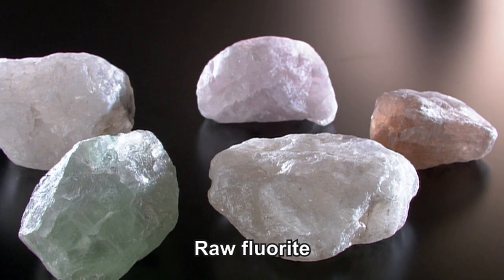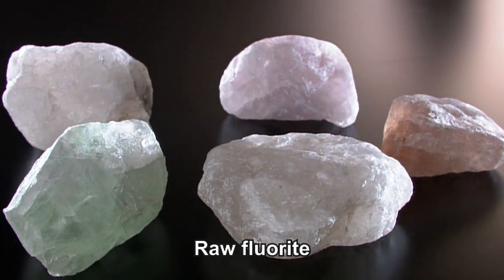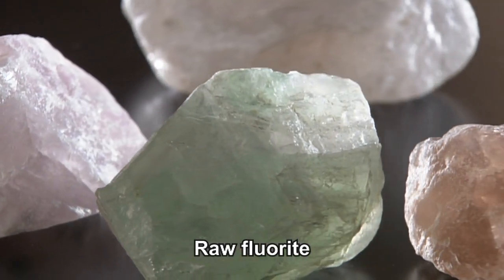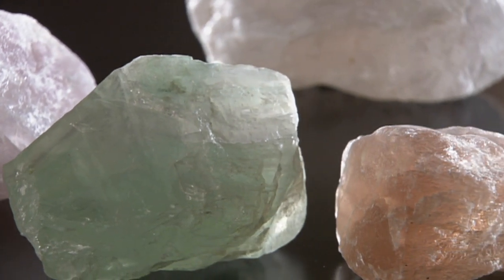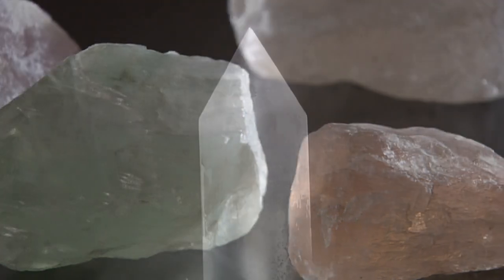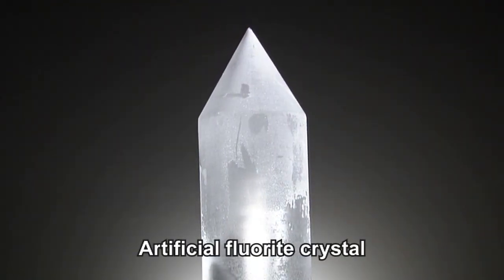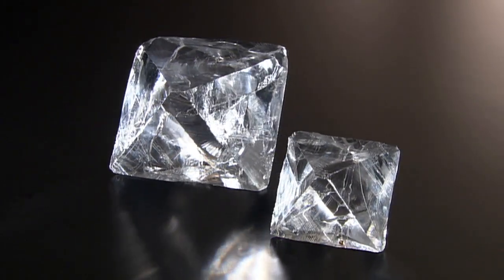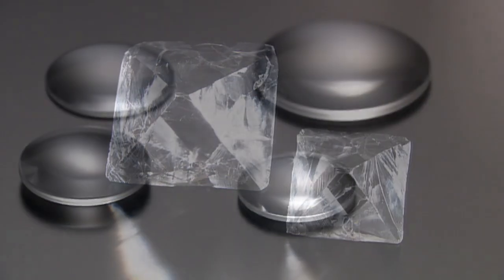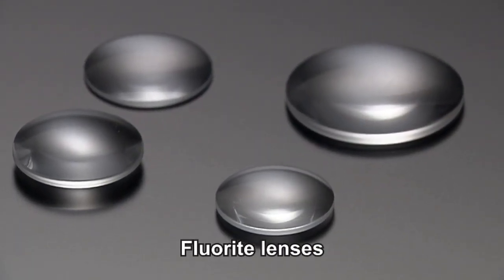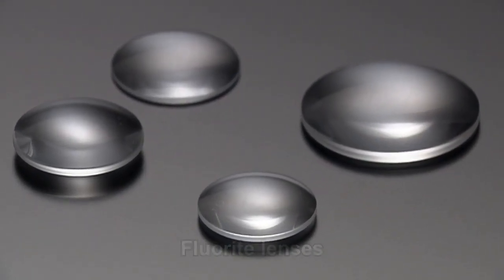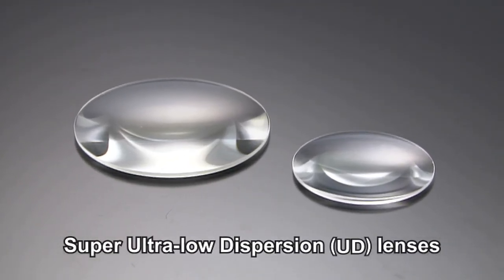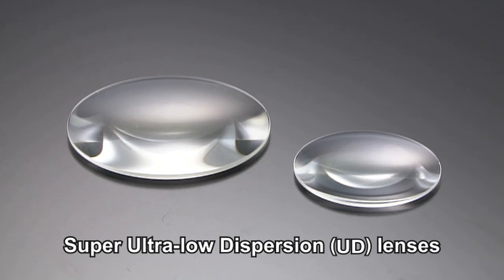Fluorite has gained attention as an ideal lens material because it is not susceptible to chromatic aberration, but there are problems with practical applications in terms of purity and size. Canon, however, succeeded in artificially creating large, high-purity crystals, and has already begun to mass-produce fluorite lenses. We have also successfully commercialized super-UD lenses, which have optical characteristics similar to fluorite.